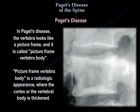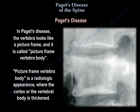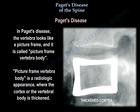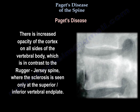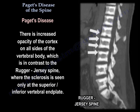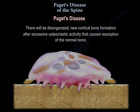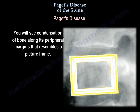In Paget's disease, the vertebra looks like a picture frame, called the picture frame vertebral body. This is a radiologic appearance where the cortex of the vertebral body is thickened. There will be vertebral body expansion and coarsened trabeculae. There is increased opacity of the cortex on all sides of the vertebral body, in contrast to the rugger jersey spine where sclerosis is seen only at the superior and inferior vertebral end plates. Disorganized neocortical bone formation occurs after excessive osteoclastic activity, causing resorption of normal bone, with condensation of bone along peripheral margins resembling a picture frame.